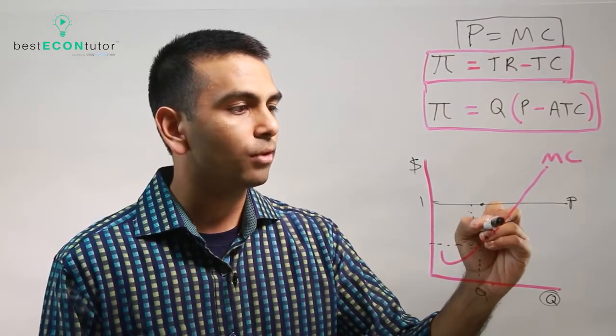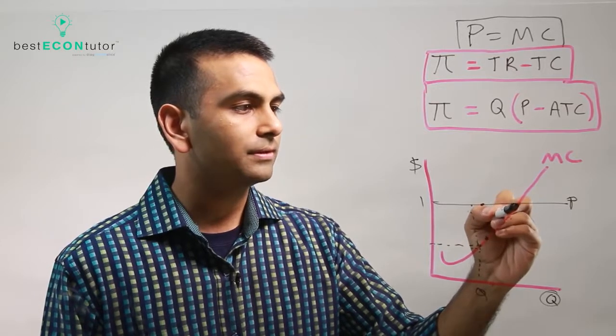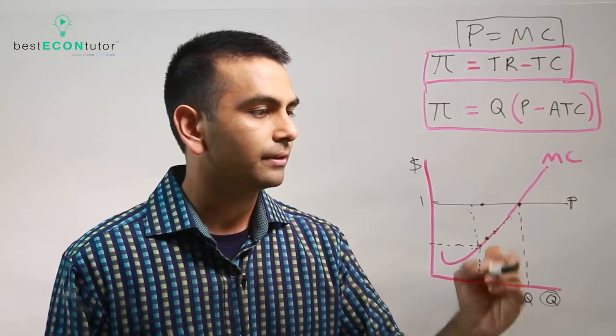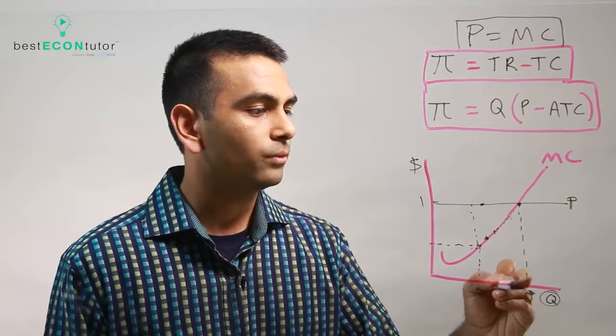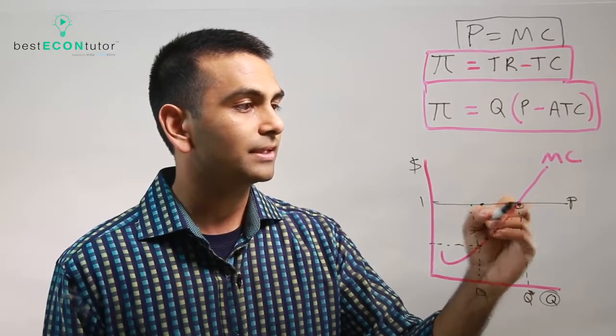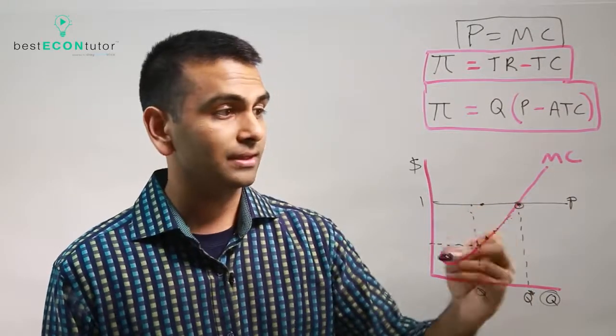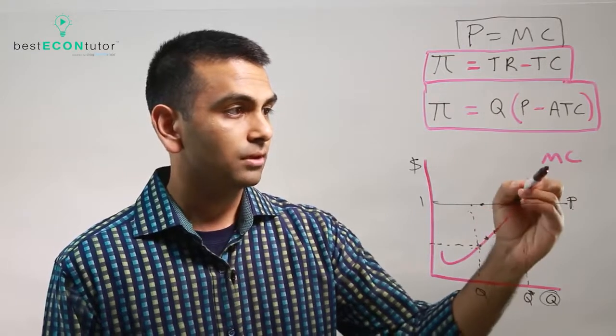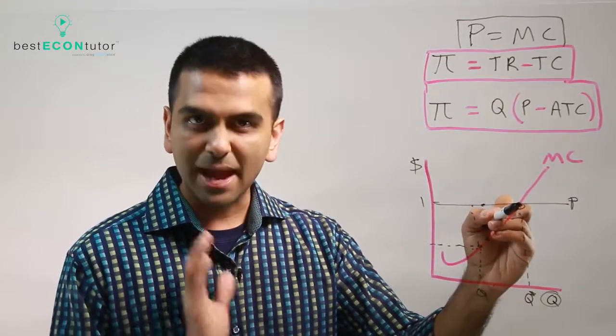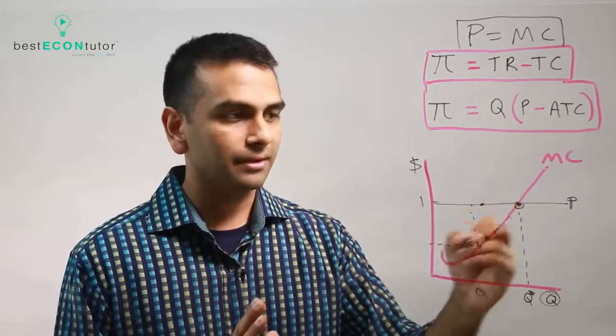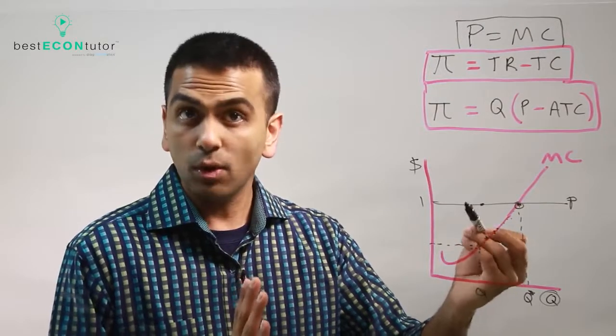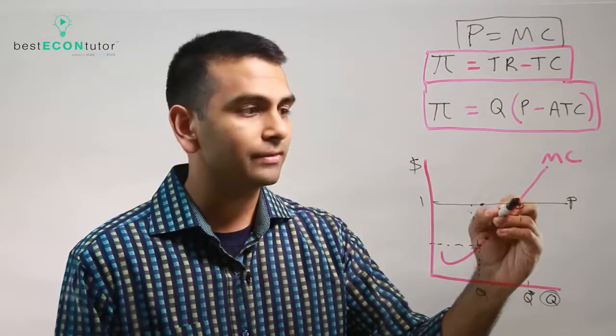So you can keep making more and more profits all the way up until here. If you're making this quantity, and that, by the way, is the quantity where P equals MC, that's where the black line intersects with the MC, the red curve. So that quantity is where you're maximizing your profits. Because anywhere before that, you want to make more of a quantity to make more profits.